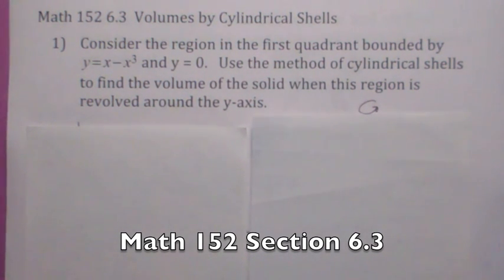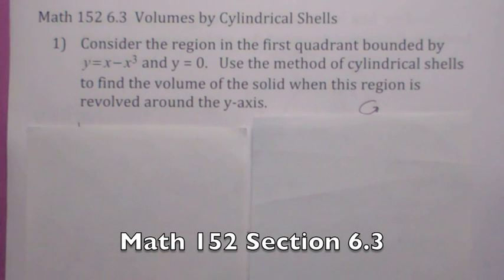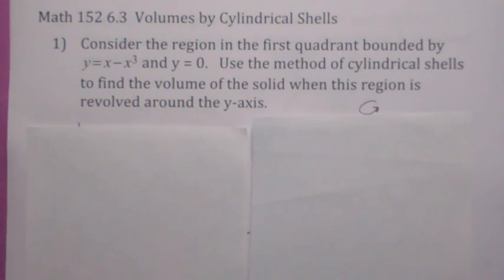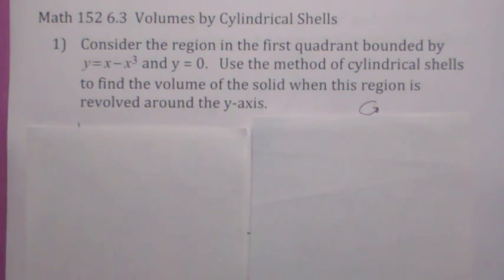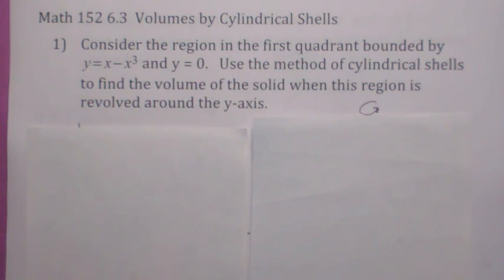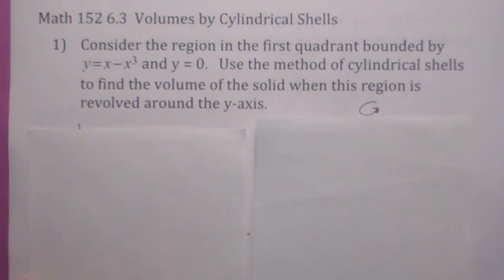This third method for computing volumes of solids is called the shell method, or the cylindrical shell method. It looks a little bit like the disk washer method, but it's actually quite different. It's similar in that it is a solid of revolution — you are revolving an area around an axis or a line — but it's actually quite different from the disk washer method.